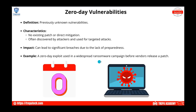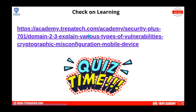A zero-day exploit can be used in widespread ransomware campaigns before vendors release a patch. Once discovered — like Log4J, which had a CVSS score of 10 — vendors typically release a patch as quickly as possible, especially when severity is critical. Every vulnerability starts as a zero-day before it's publicly known.